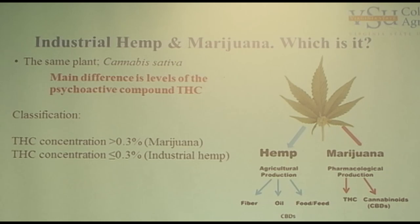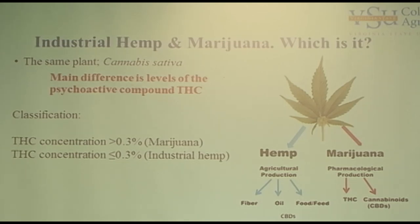The difference between marijuana and industrial hemp is right here. It's actually the same cannabis hemp plant, but it's what it produces. For industrial hemp, we use it for all sorts of other things, but marijuana has the high THC levels. Marijuana has up to 30% THC level; industrial hemp is less than 0.03%.